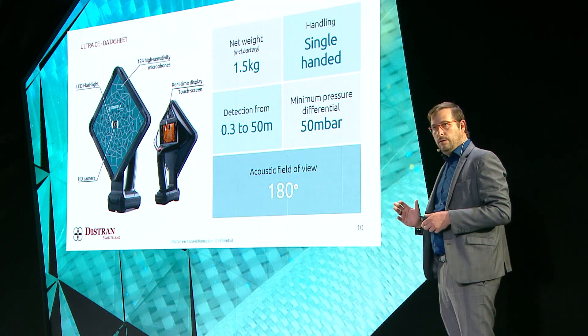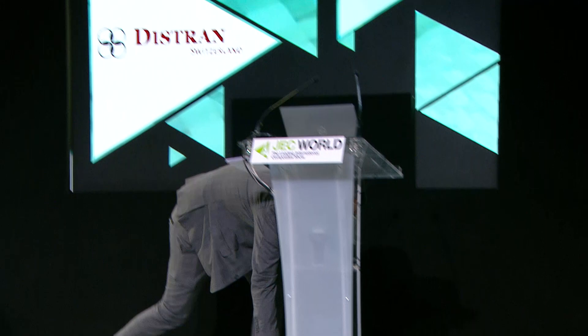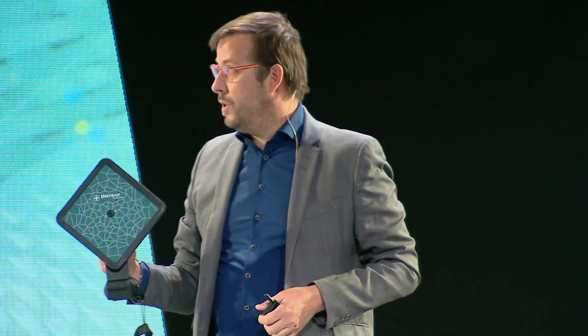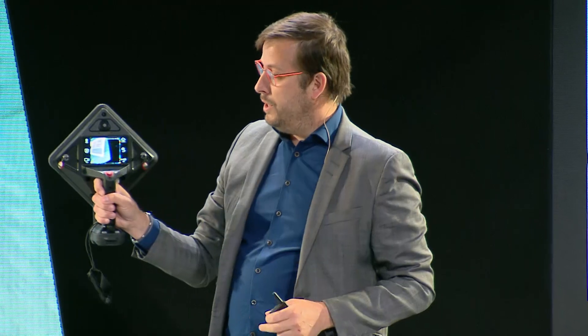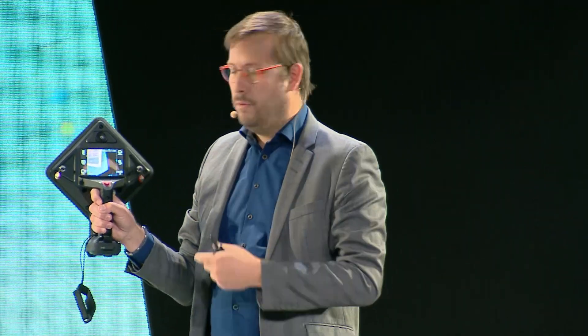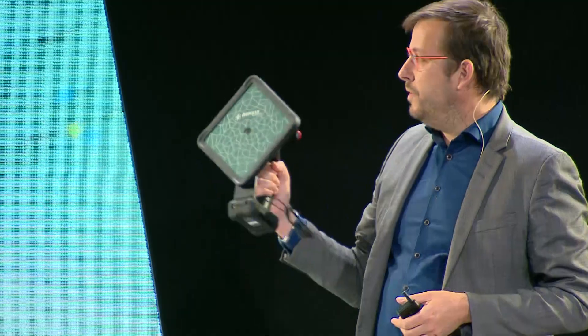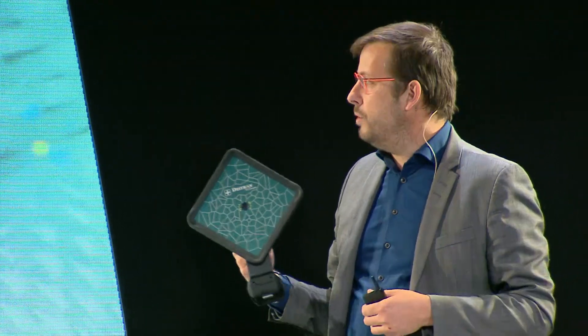On the spec sheet: the camera is right here with me. It is very easy to handle — single-handed, weighing 1.5 kilos. On the front panel you have the network of acoustic sensors, in the middle the optical sensor, and at the front the flashlights for illumination in dark places. At the back you have a large touchscreen display where operators visualize where the leaks are. Detection works from 30 centimeters up to 50 meters, which makes sense for large-piece manufacturers like wind blade facilities.